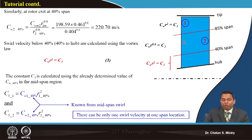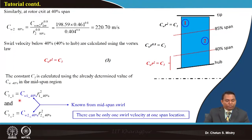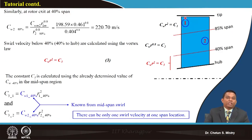Below 40 percent span, Cw·r² = C3 (constant). Since at 40 percent span only one whirl velocity value applies, we use the existing Cw·r^0.8 law evaluated at that point to determine C3. Similarly, constant C1 near the tip region is determined from the 85 percent span boundary condition.